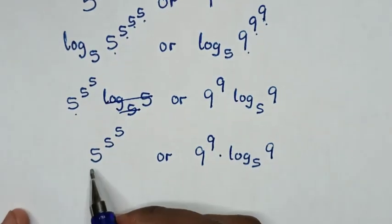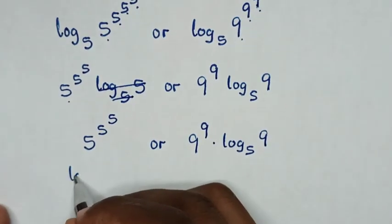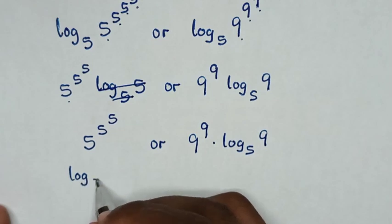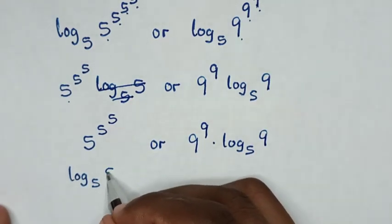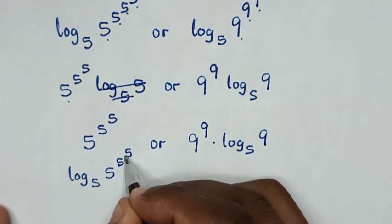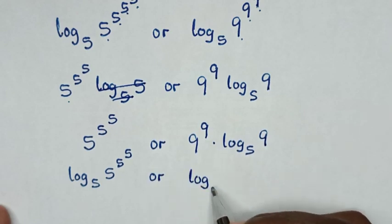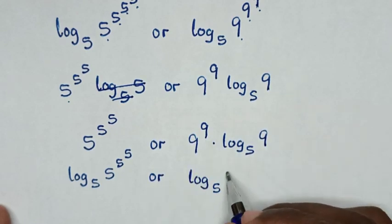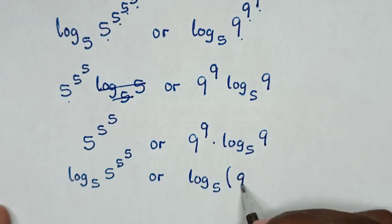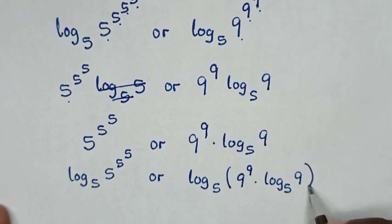We apply log base 5 to both sides again. So we compare log base 5 of (5 power 5 power 5) with log base 5 of (9 power 9 times log base 5 of 9).